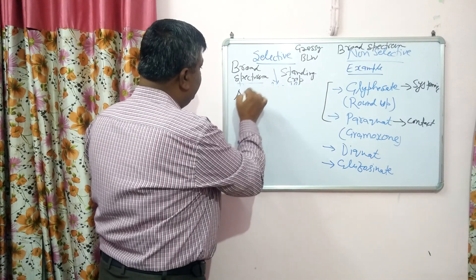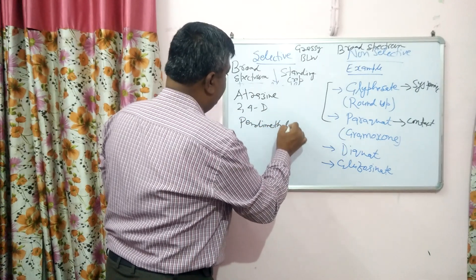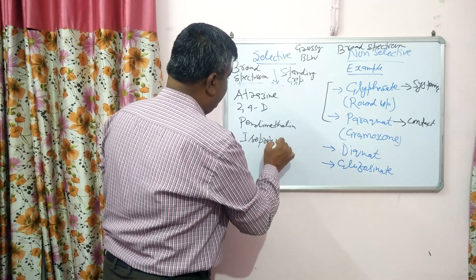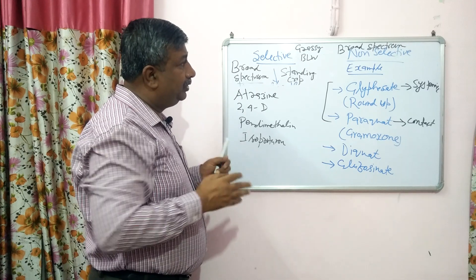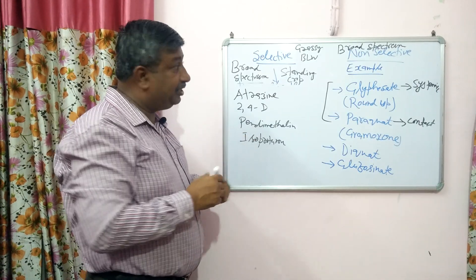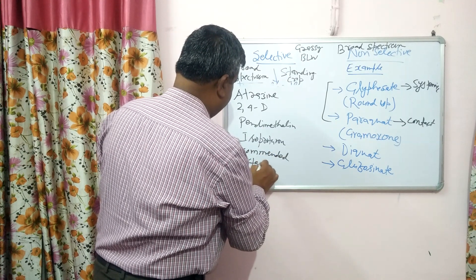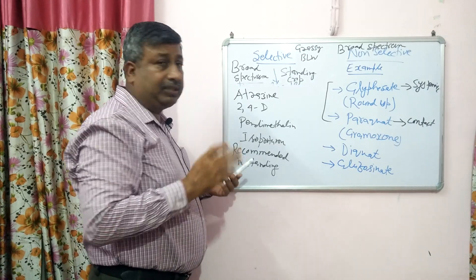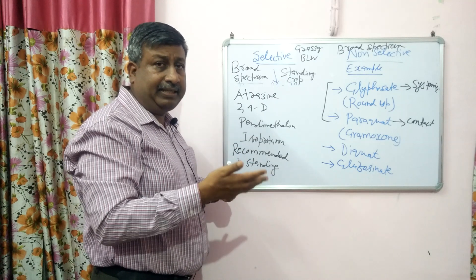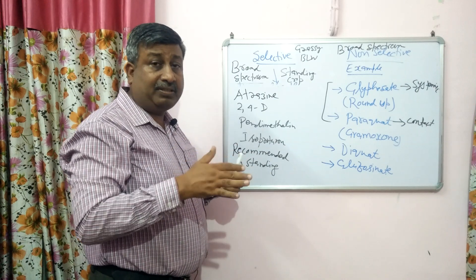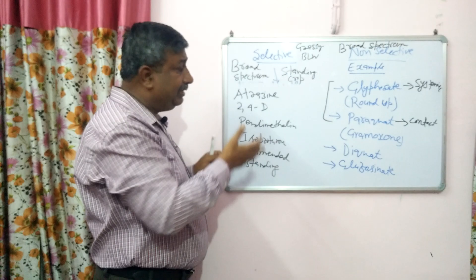Other herbicides — whether it is atrazine, 2,4-D, pendimethalin, or isoproturon — whatever herbicides are recommended in crop, all recommended herbicides are selective herbicides because they do not kill the crop. Selective herbicides are recommended in the standing crop. Non-selective herbicides are not recommended in the standing crop — otherwise they damage the crop. For example, if glyphosate is applied in sugarcane or wheat, those crops would die.